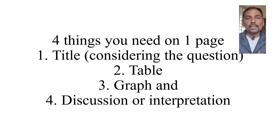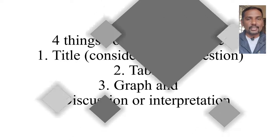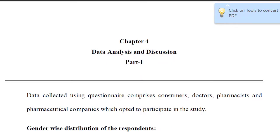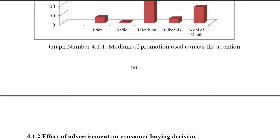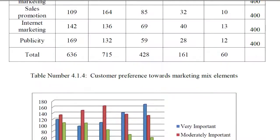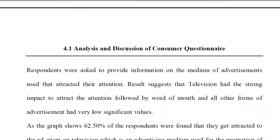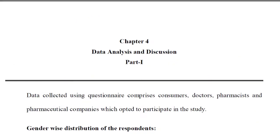Let us go to an example and see how the data analysis and interpretation chapter has to be written. You'll have to write the chapter name on the top — 'Data Analysis and Discussion.' I had divided this chapter into part one and part two, though even if you don't divide it into parts, that's absolutely fine. On one page, you need a question, its discussion or interpretation, and I will show you how it is written with a suitable example.